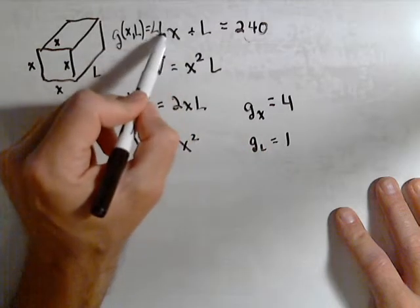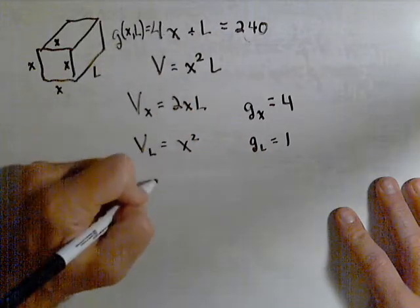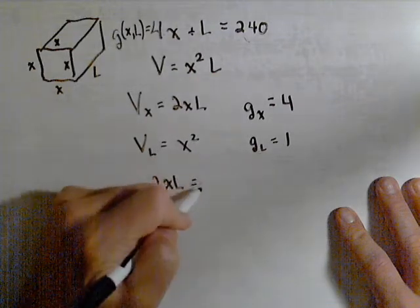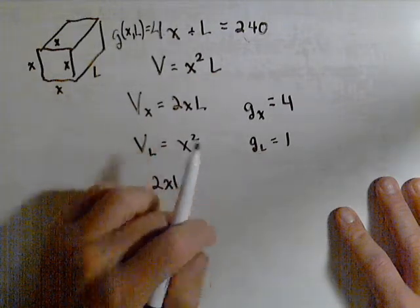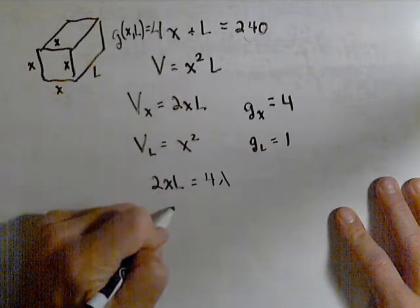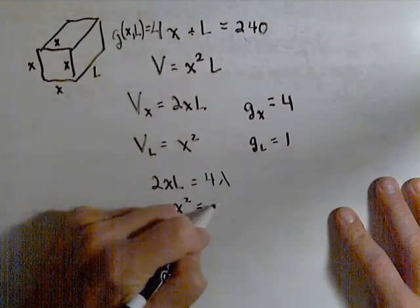Taking the partials of that with respect to x and with respect to L, our system is going to have 2xL equals lambda times 4, let's write it as 4 lambda. And we have x squared equals 1 times lambda or lambda.